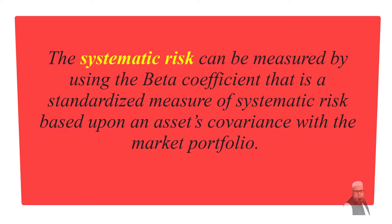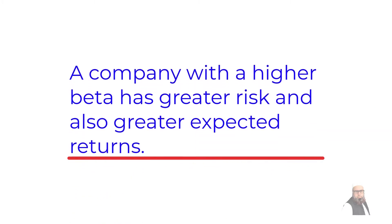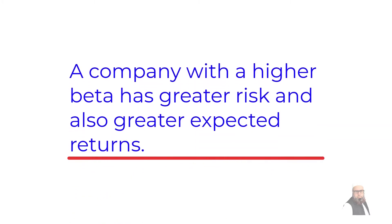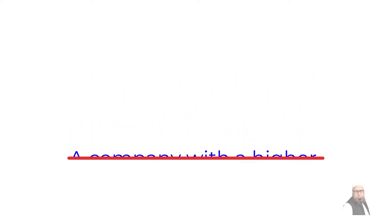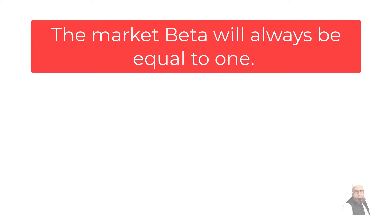Systematic risk is simply the co-movement of the security with the market, and it can be measured using the beta coefficient — a standardized measure of systematic risk based on an asset's covariance with the market portfolio. A stock with a beta of 1.20 has systematic risk 20% greater than the average market, while a beta of 0.70 means 30% less risky than the market. By definition, the market portfolio itself always has a beta of one.